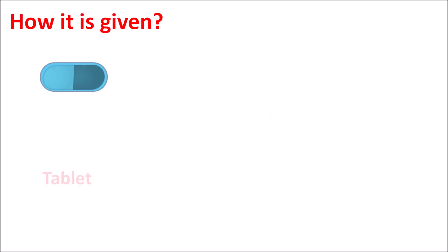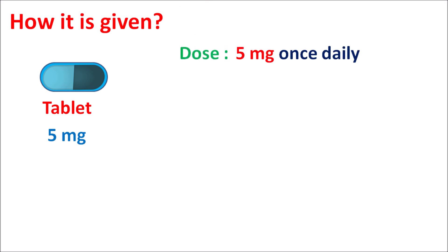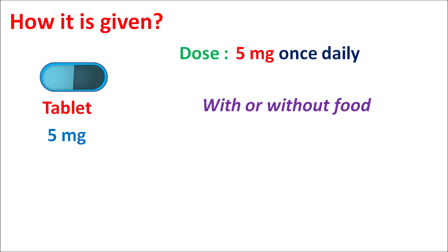How is it given? This drug is available as a tablet at a strength of 5 mg. The dose of linagliptin is started at 5 mg once daily to control the blood glucose levels, and sometimes it can be combined with other drugs such as metformin to reduce raised blood glucose levels in patients with type 2 diabetes mellitus. This drug can be taken either with food or without food, because food has no significant effect on the absorption of linagliptin.